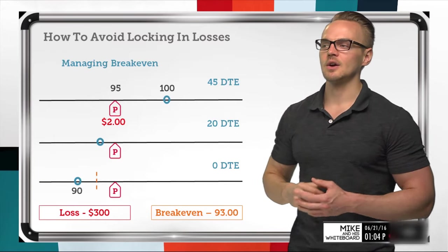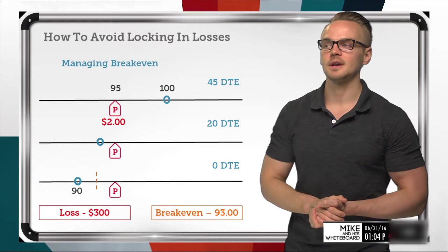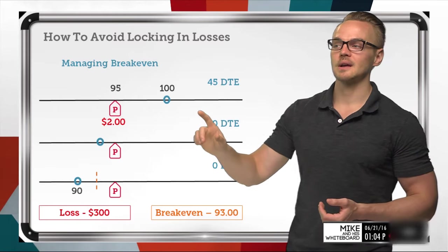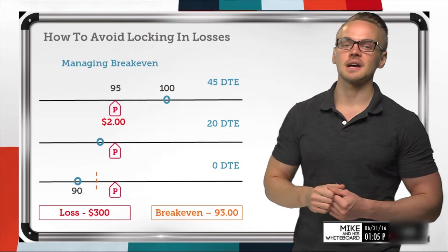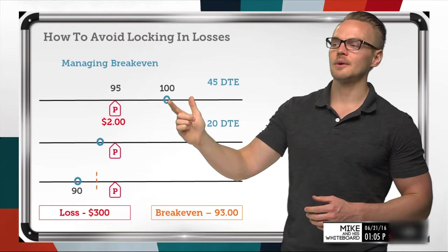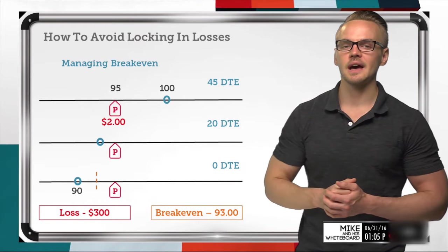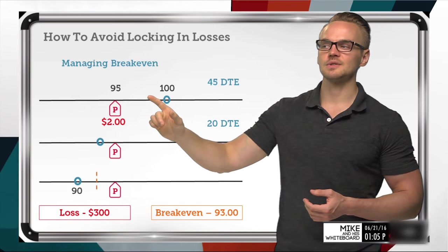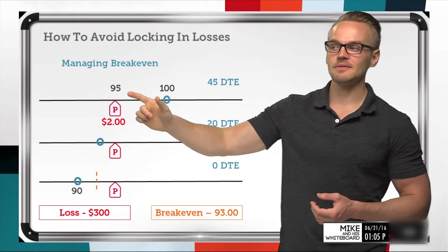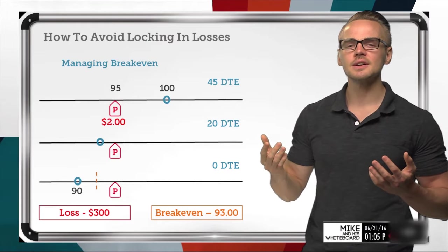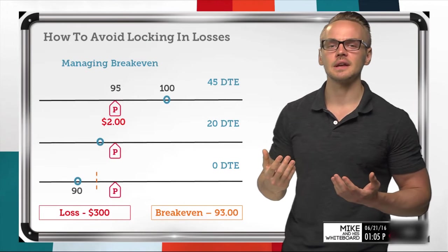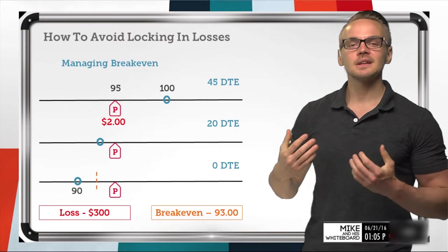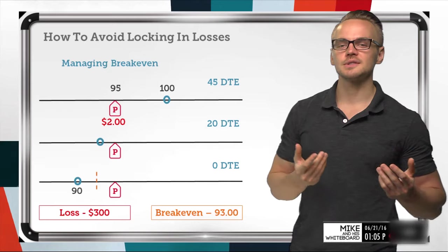We deploy this trade and sell the out-of-the-money put, which has a much higher probability of success compared to buying shares outright. If we bought shares outright, we'd have unlimited upside, but selling this 95 put lets us profit if the stock drops to 99, 98, 97, or even down to 95 — as long as the put expires out of the money and worthless, we keep the $2 credit.